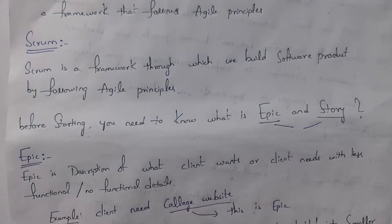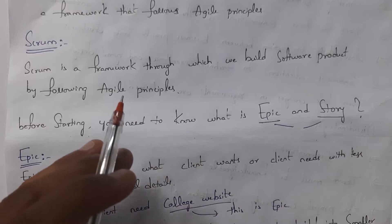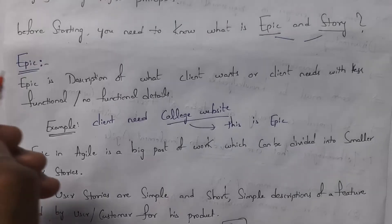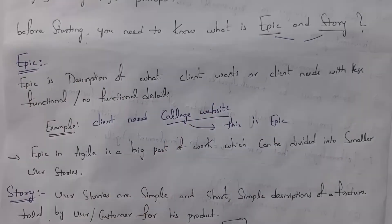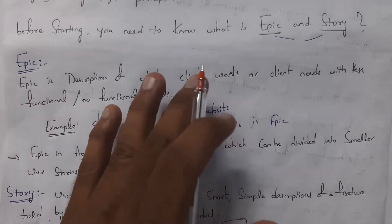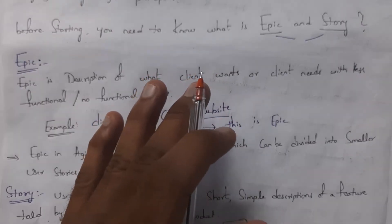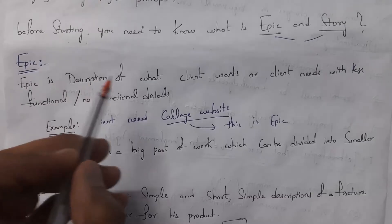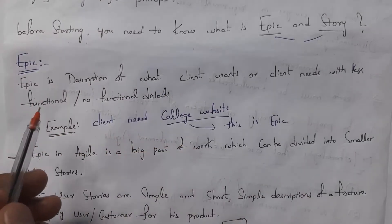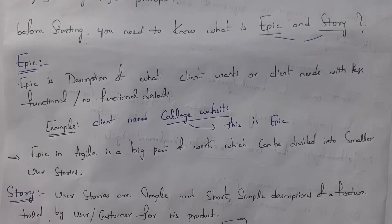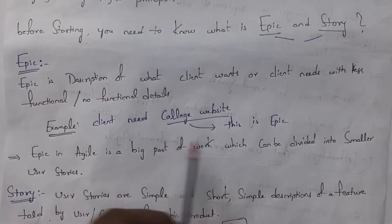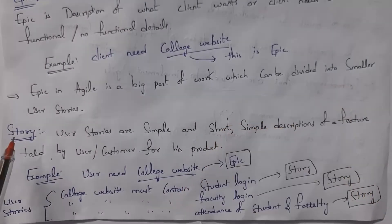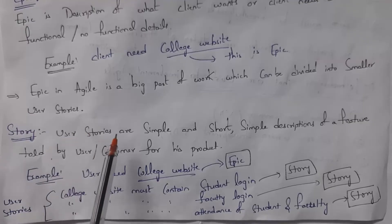Before explaining Scrum further, you need to know what an Epic and a Story are. For example, if I am a college owner and I tell a product manager 'I want college software,' that is considered an Epic. An Epic is a description of what the client wants or needs, with little or no functionality details. This big work can then be divided into smaller user stories, where each story describes one feature.